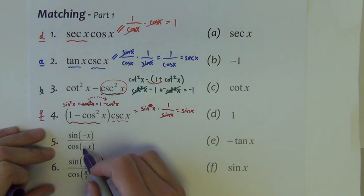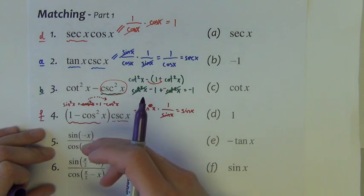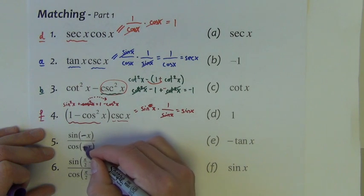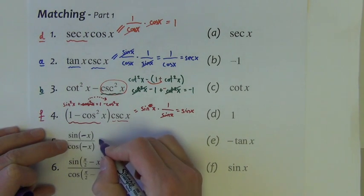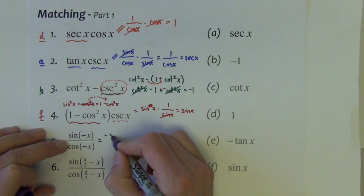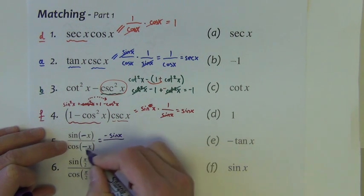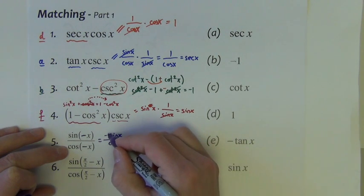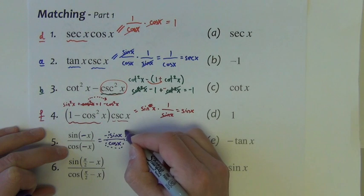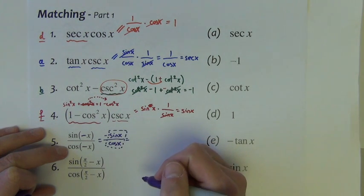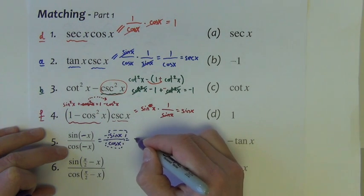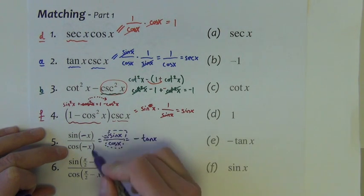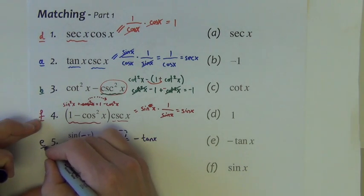Next: sine of negative x divided by cosine of negative x. These are easy to identify since only the even-odd identities have negatives like that. Sine of negative x equals negative sine x, and cosine of negative x equals cosine x. So we have negative sine x over cosine x. Sine divided by cosine is a quotient identity for tangent, giving us negative tangent x. That is e.